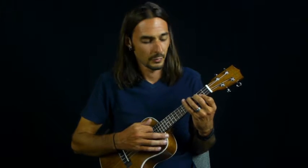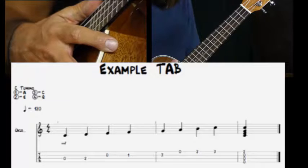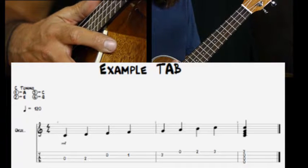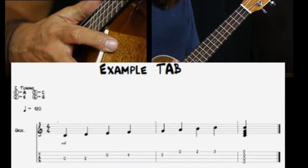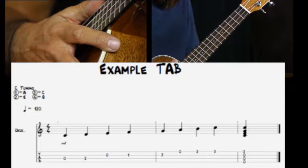So I want to show you how to read tab. You're going to see it a lot, it's going to make things a little easier for you. If you look at the example chart there, you have the regular music staff on top, and below that, you have the tab. There's four lines there.